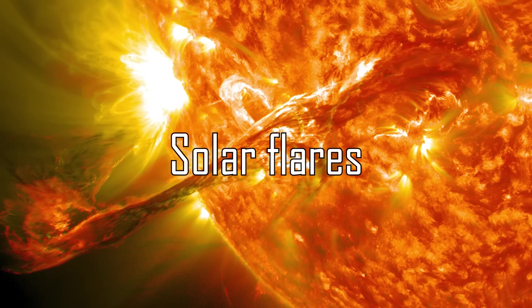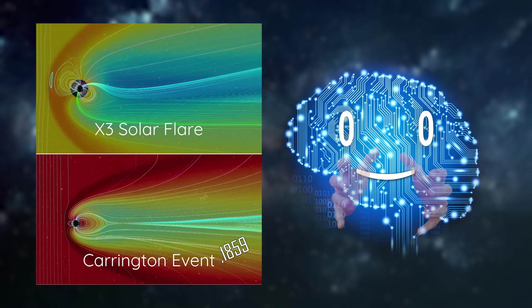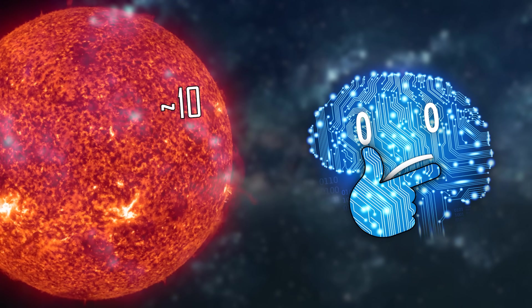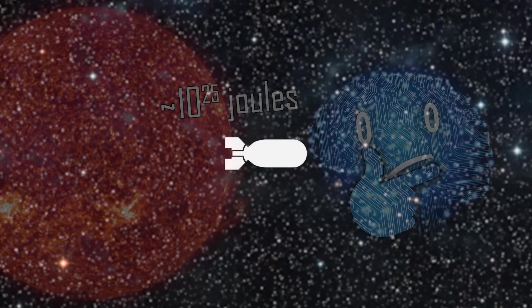Solar Flares. The Carrington event was the largest solar storm ever recorded, estimated to have released energy equivalent to 10 to the power of 25 joules. That's the equivalent of a couple of million hydrogen bombs, not all of which were thankfully directed toward the Earth.